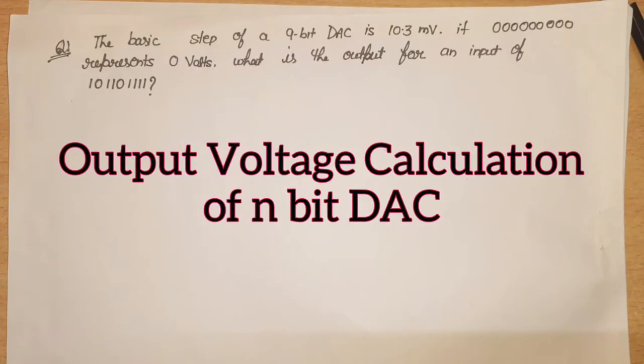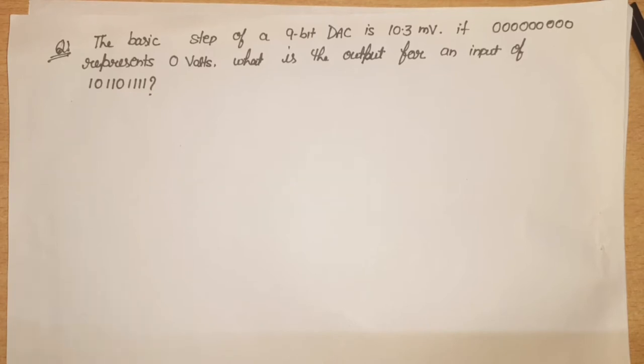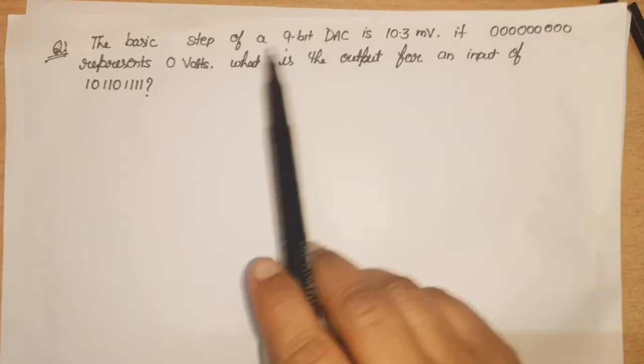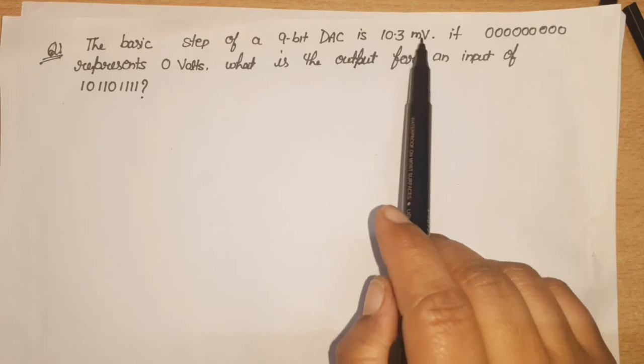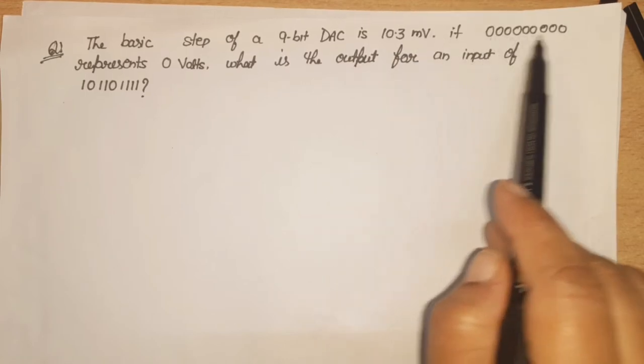I will discuss how we can calculate the output voltage of an N-bit DAC digital to analog converter. So I have taken an example.